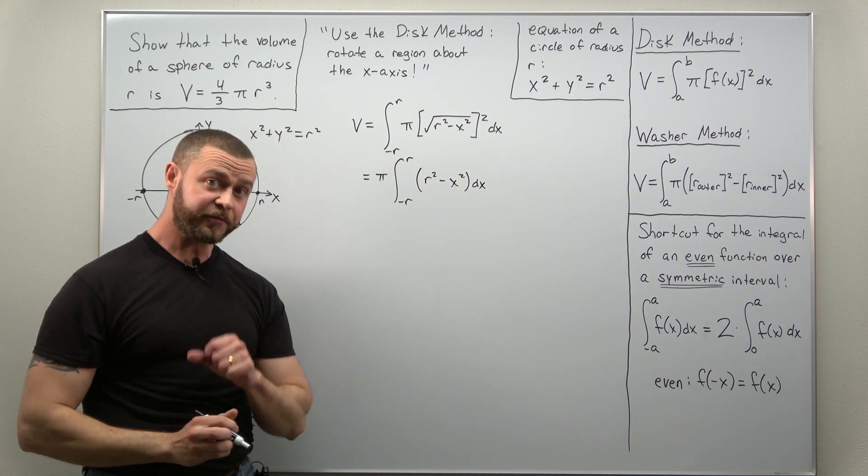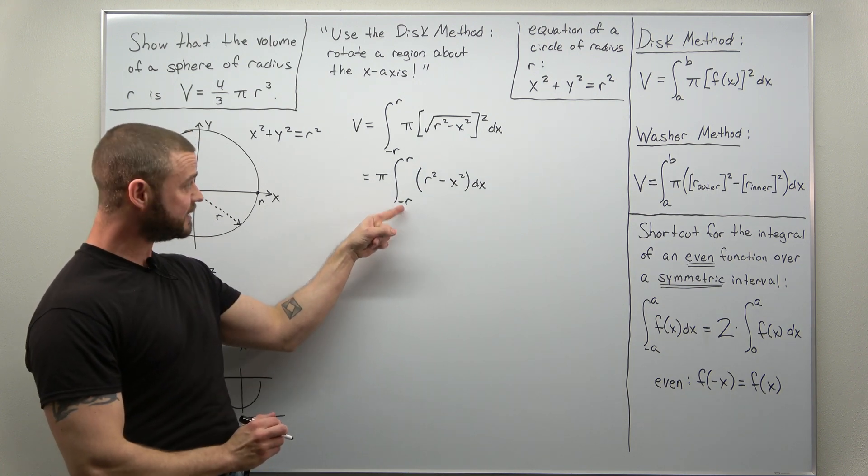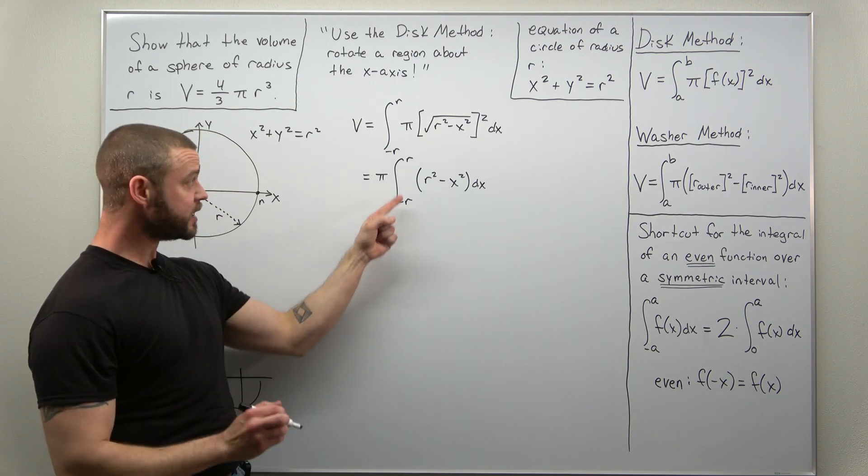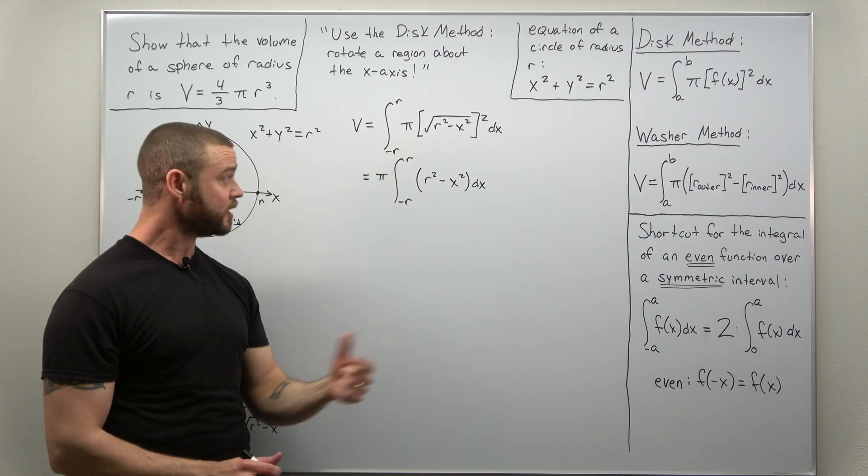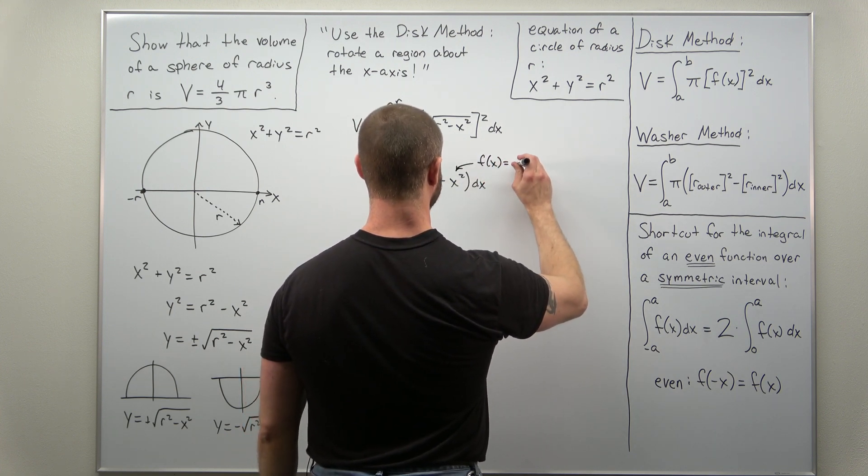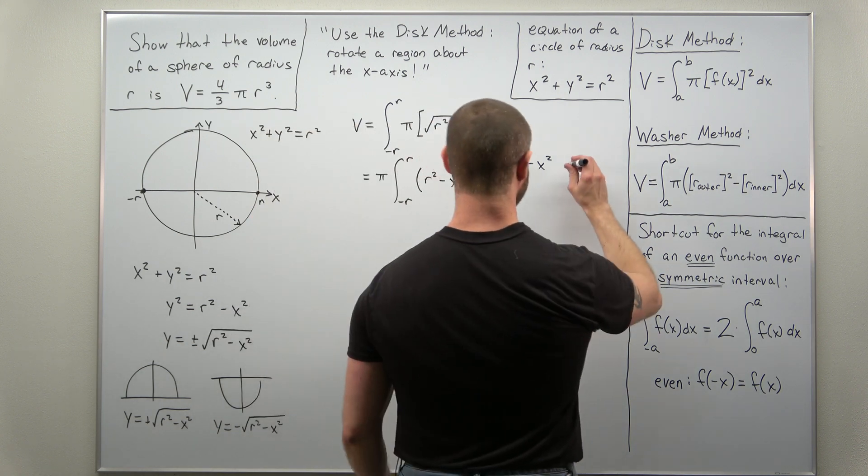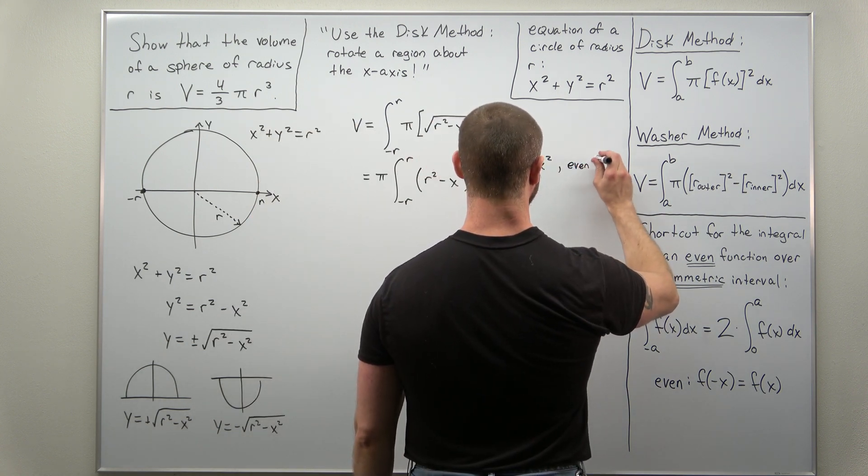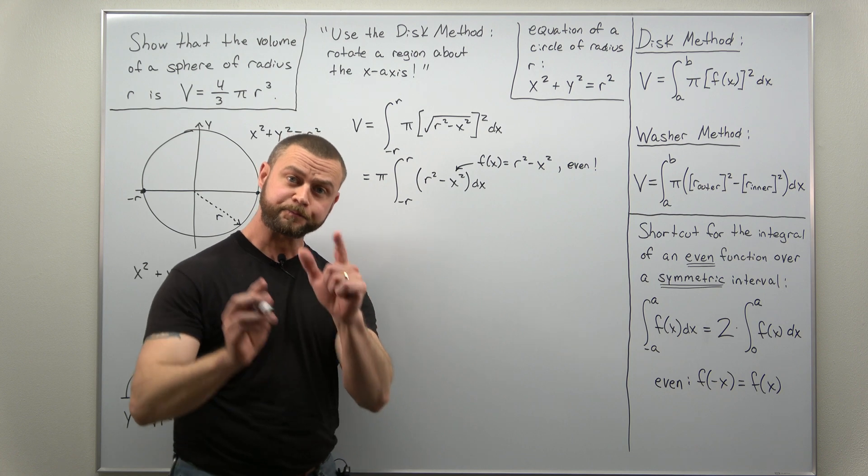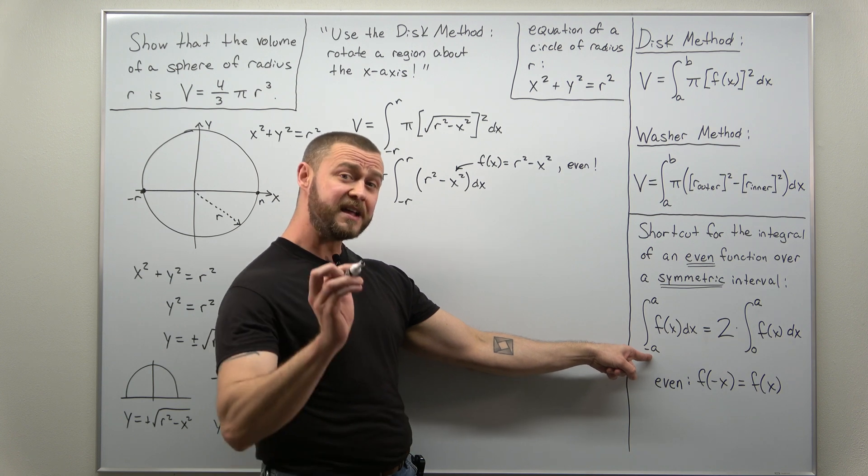All right, you could integrate from here but this is going to be a little bit tedious when you then plug in with the fundamental theorem of calculus your limits negative r and r for x. What we can notice is we have a symmetric interval from a negative number to a positive number and the function that we're integrating, if I call that f of x as r squared minus x squared, that is an even function. In other words, if you were to plug a negative in for x you just get the same thing as f of x. So we have a shortcut which hopefully you're familiar with when you have an integral of an even function over a symmetric interval.